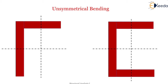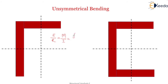In the theory of simple bending, the section of the beam is symmetrical about the plane of bending. The simple flexural formula derived is: M/I = σ/y = E/R, where M is the moment, I is the moment of inertia, σ is the stress, y is the distance from the neutral axis, E is Young's modulus, and R is the radius of curvature. This formula is not applicable when the section is not symmetrical about the plane of bending.